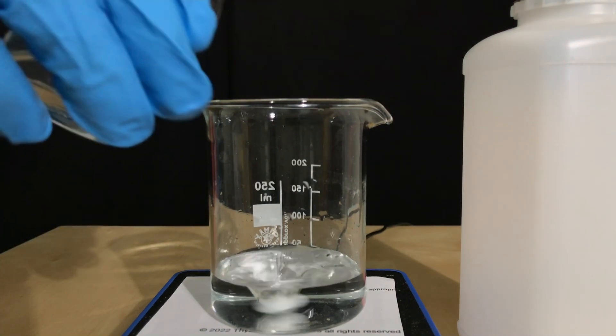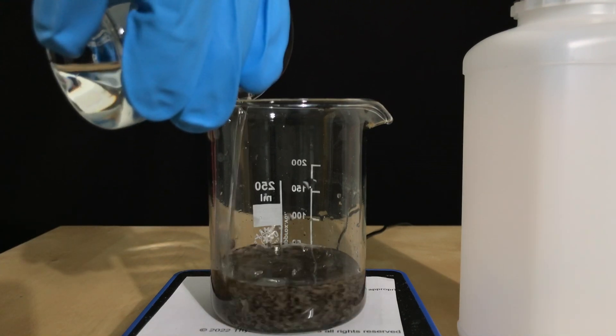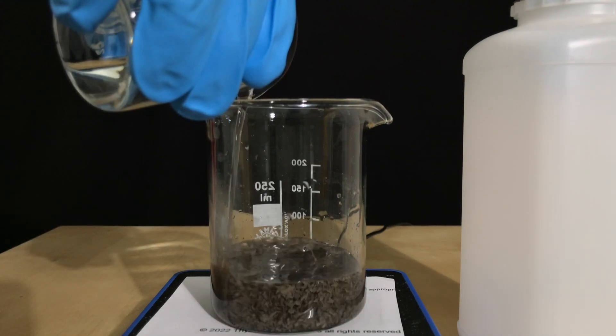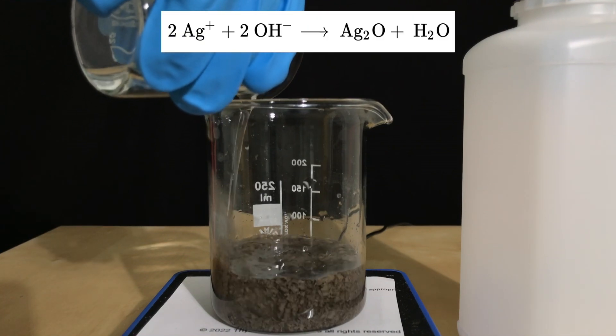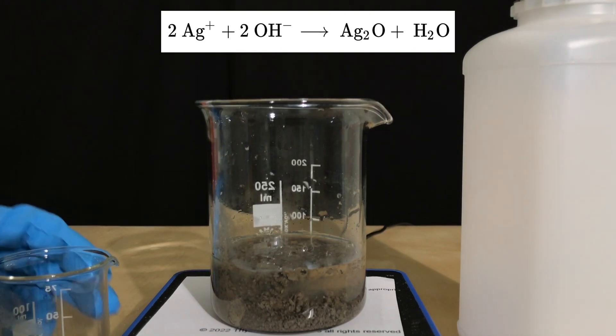The solutions of sodium hydroxide and silver nitrate only have to be combined. After combining them, you immediately see this blackish-brown precipitate. As silver(I) ions react with hydroxide ions, insoluble silver(I) oxide crashes out and water is formed.